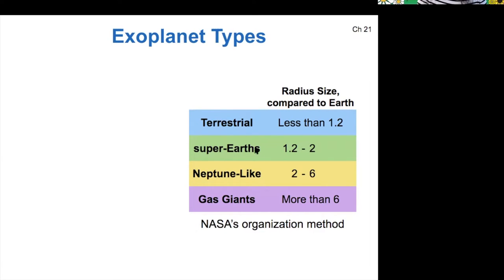There's a category called super-Earths, which we don't have any of in our solar system. Those are planets that have somewhere between 1.2 to 2 Earth radii and have a rocky density.